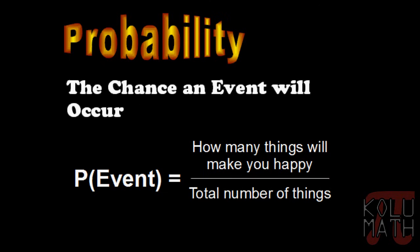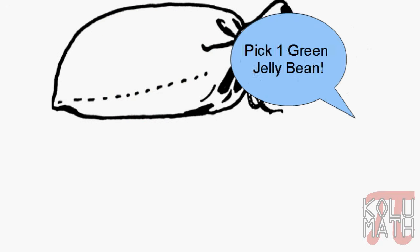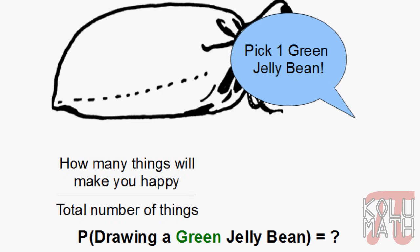If you remember this simple technique, you can solve all the probability problems we'll be looking at today. Let's take a look at an example. We've got some jelly beans here, we're going to put them in a sack and shake them up, and I'm going to ask you to reach in and pick one green jelly bean. We want to know the probability of drawing a green jelly bean, so let's use our technique: how many things will make you happy over total number of things.